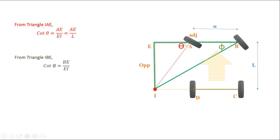Now let's go to the next triangle IBE. Here, cot phi is equal to BE divided by EI. Also, BE is equal to AE plus W, and write as follows.